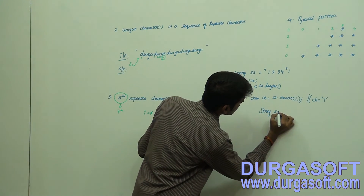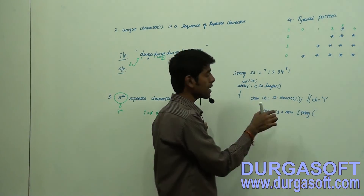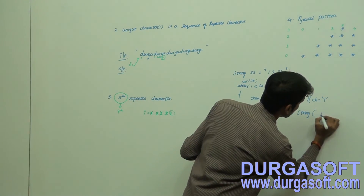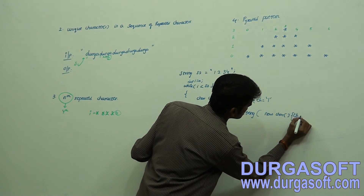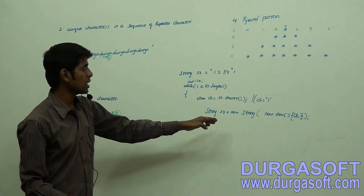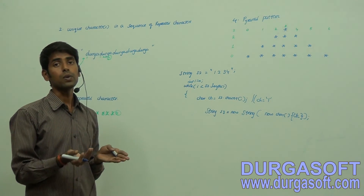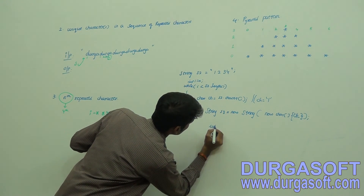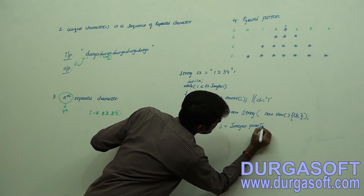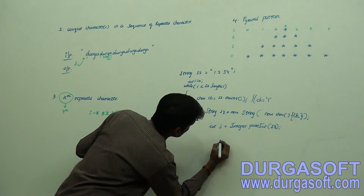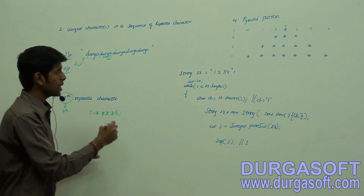The String class has a constructor that takes a primitive char array. So new String(new char[]{ch}) gives a String instance containing that character, and then Integer.parseInt(s3) converts it to the primitive int. This is very important because in bigger interview questions, all input to your method comes as Strings, and you have to convert characters to primitive ints.